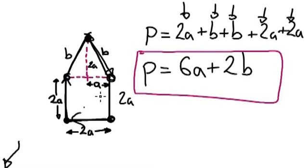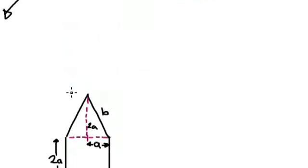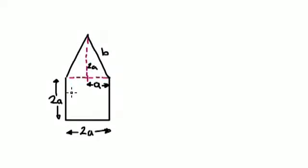So if someone gives you this shape, all you need to know is the length A and the length B, and then you can work out the perimeter. Now the hard part — work out the formula for the area of this shape.